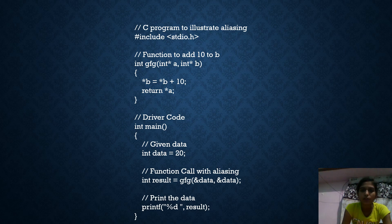A C program to illustrate aliasing: a function to add ten to b — int gfg(int *a, int *b) — then returns a. The driver code uses int data equals 0. Also, it gives the last at 20, function call with aliasing: int result = gfg(&data, &data). Print the data and print the result.